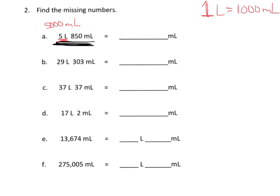Plus the eight hundred and fifty milliliters that we already have means we now have five thousand eight hundred fifty milliliters, because we have to add these together once they're in the same units — milliliters — we can add them together.